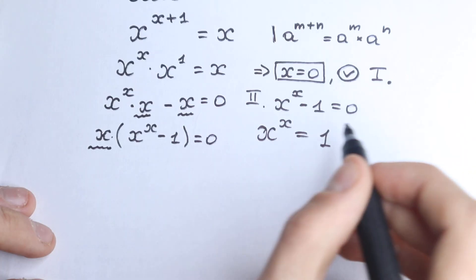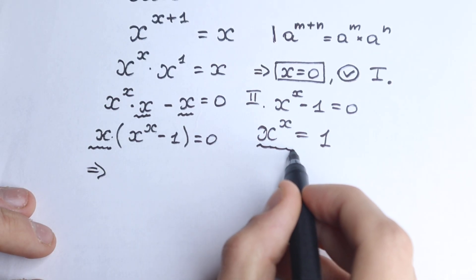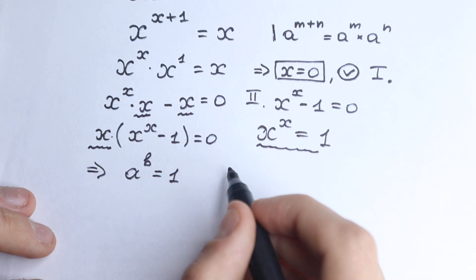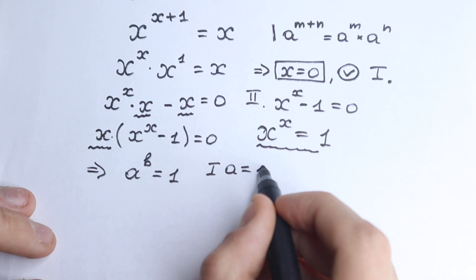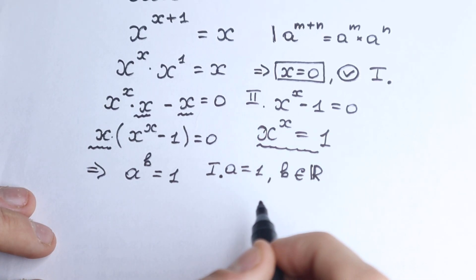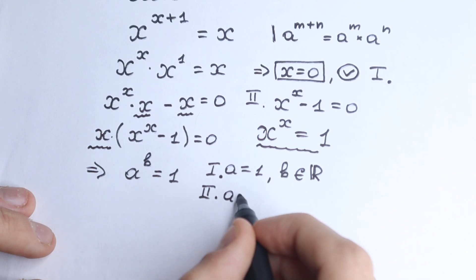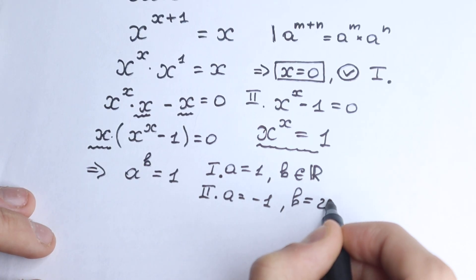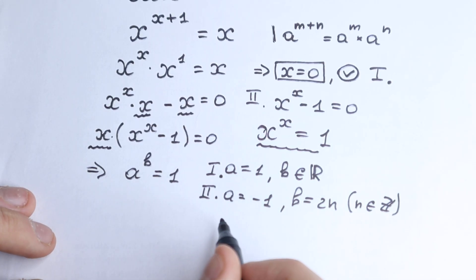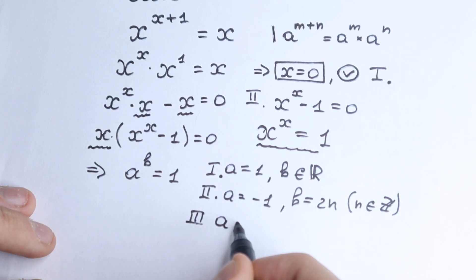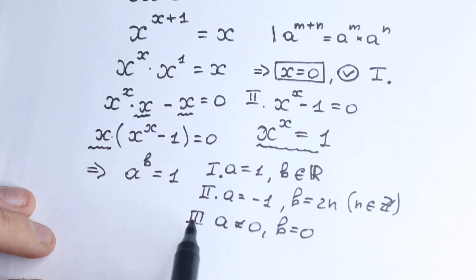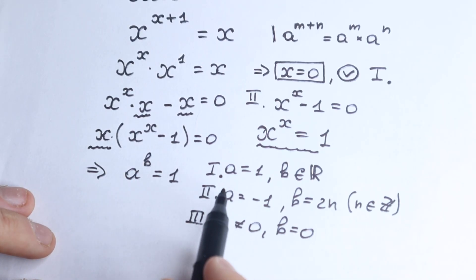In general math terms, the equation a to the power b equals one has three cases. First case: if a equals one, then b can be any real number. Second case: if a equals minus one, then b must equal 2n where n is an integer — that is, b is even. Third case: if a is not equal to zero and b equals zero.